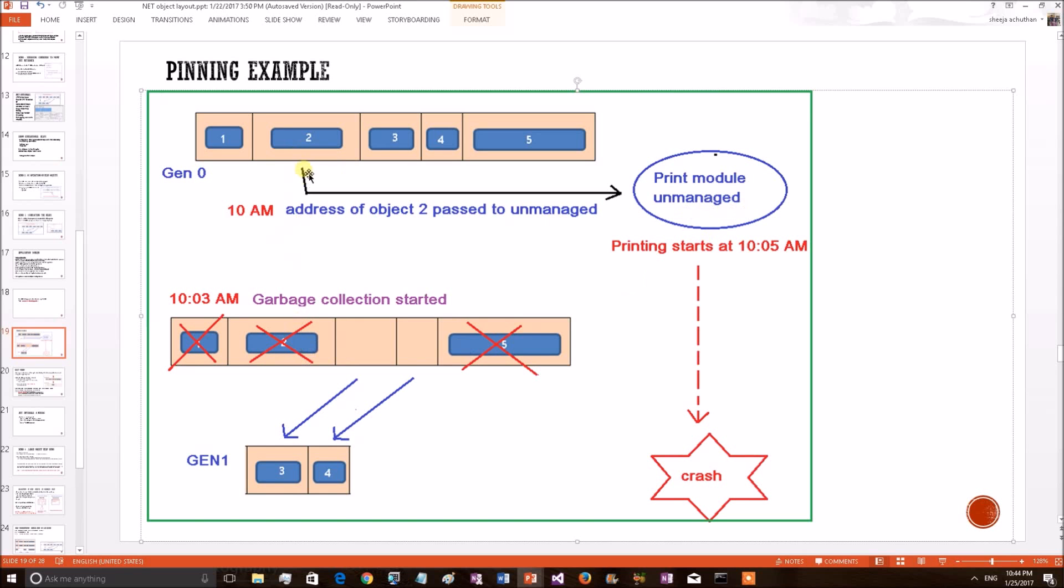If the object is pinned, the garbage collector will not touch this object because it needs to be passed to the unmanaged module. It will skip the collection, so the object will still exist in the same address which was there, so the unmanaged module can access this object.